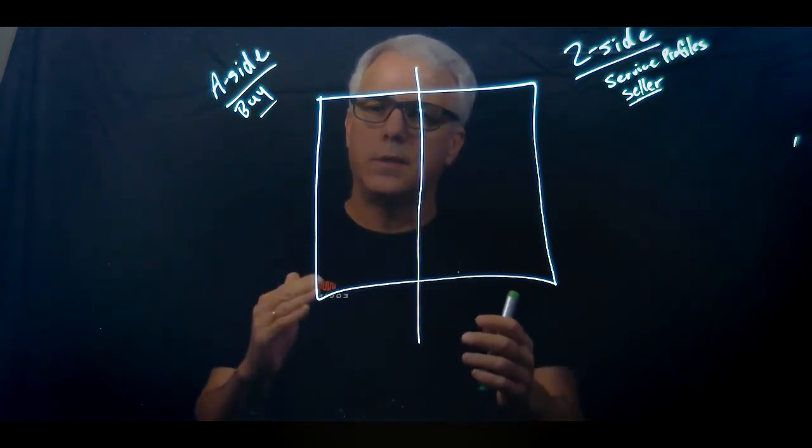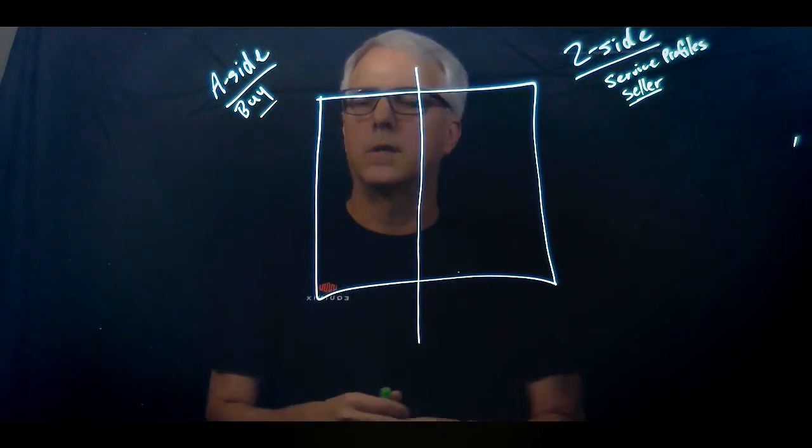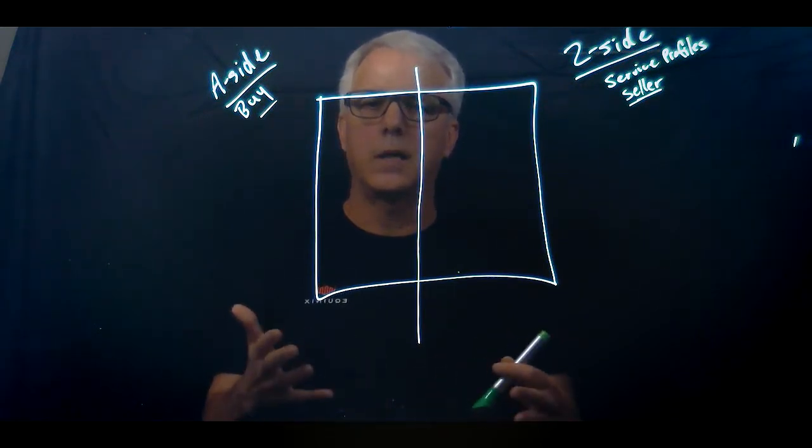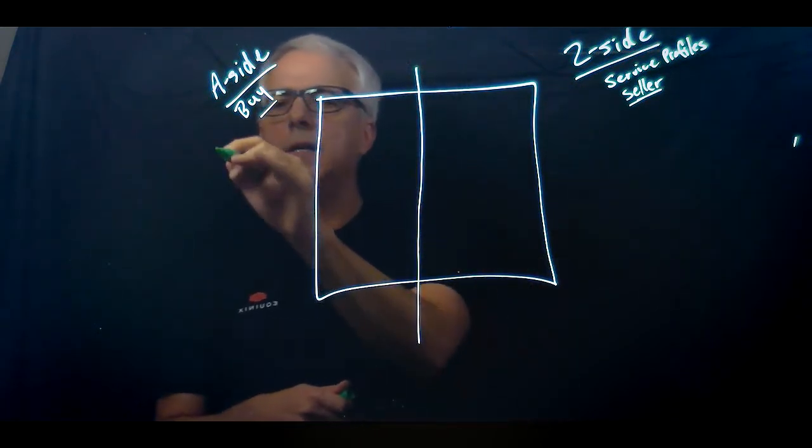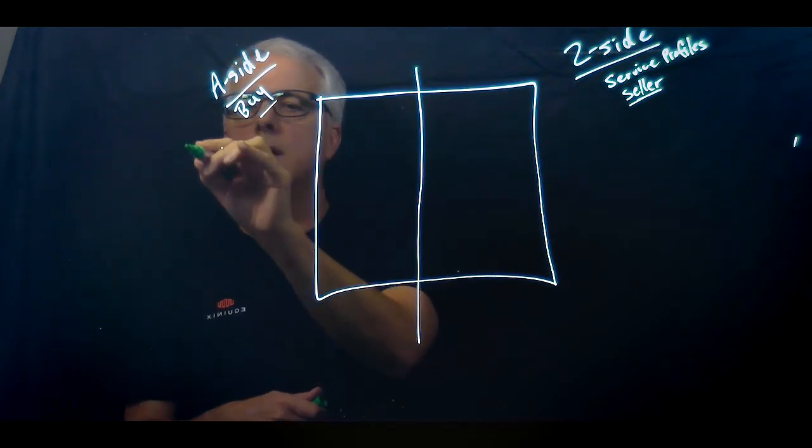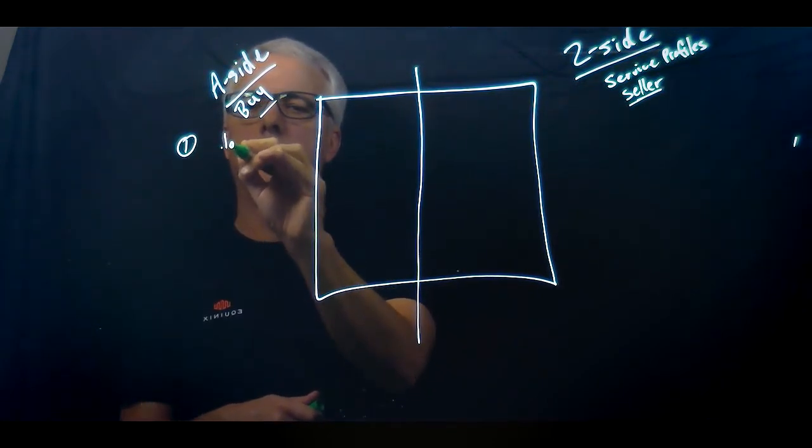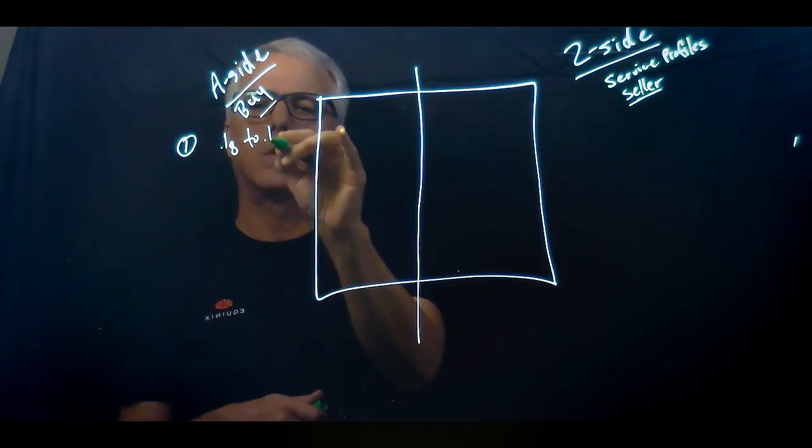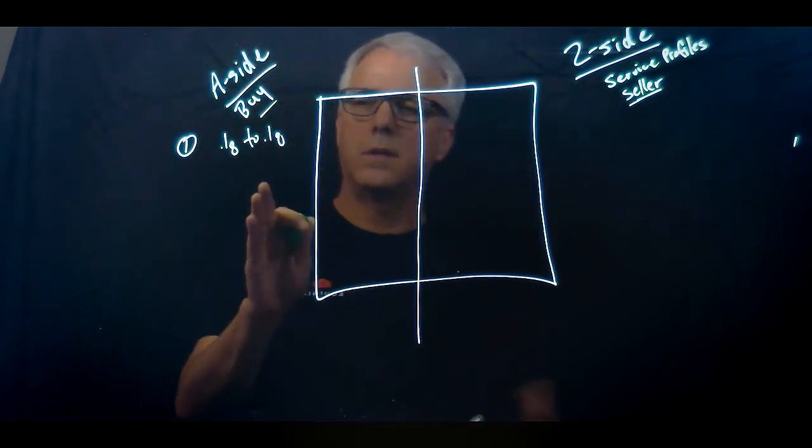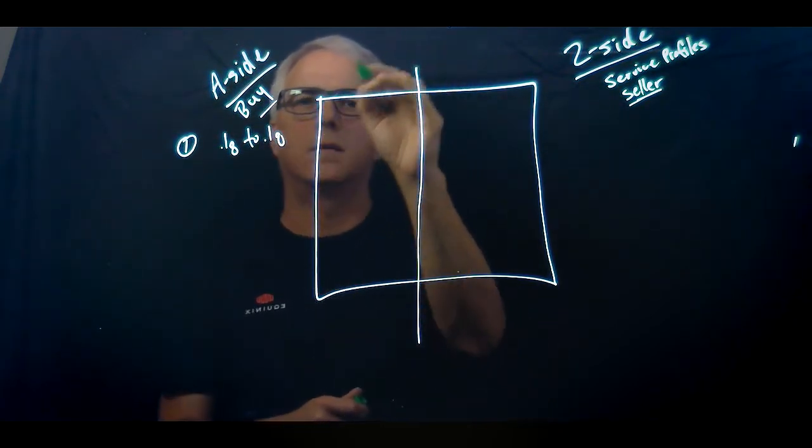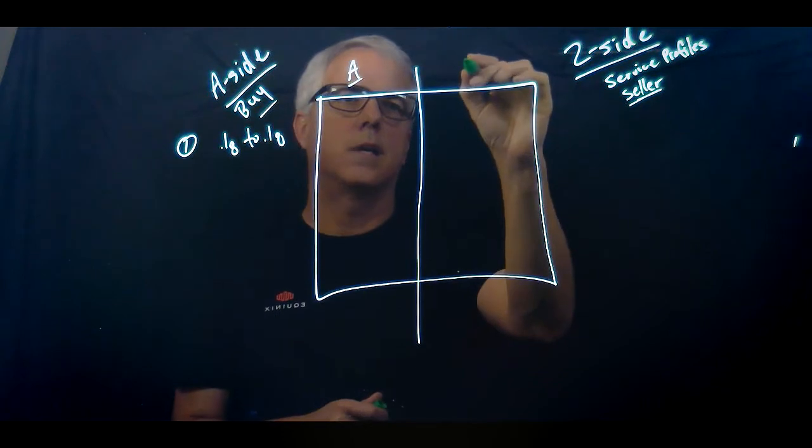So there are basically four scenarios in a physical world that you can apply to the ECX switch. On the A side, scenario one is .1Q to .1Q. And what that scenario is, is on the A side, there's an A side and Z side.